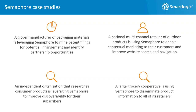They use Semaphore to go through all that incoming information and mine it for useful things. We also have a national multi-channel retailer of outdoor products using Semaphore to provide contextual marketing — knowing that a particular customer is interested in skiing and is in a particular place, so when that customer lands in Aspen, Colorado for a ski vacation, they can send a message: 'There's a seminar on skiing at our local store four miles from you, here are the directions.'